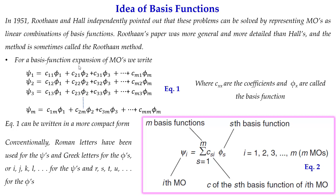This equation can be written in compact form as: ψ_i = Σ (s=1 to m) c_si φ_s, where m is the total number of basis functions. All m basis functions are linearly combined to express one wave function, φ_s is one basis function, and c_si is the coefficient of basis function s for the i-th MO. Conventionally, Roman letters (i, j, k, l) are used for wave functions and Greek letters (φ, with indices r, s, t, u) for basis functions.